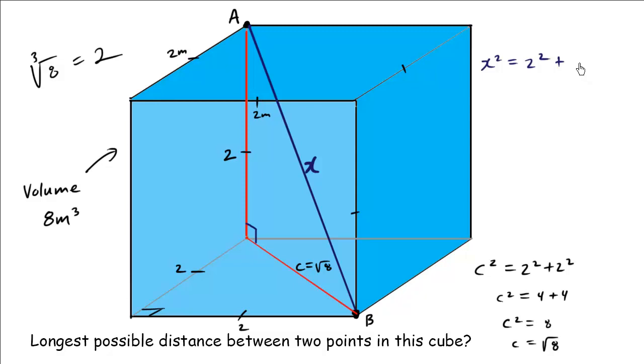Plus this side squared which is C. Hence, we know that C is root 8, but we're squaring it. So what ends up happening is the square and the square root cancel out. So we end up just plus 8. So X squared equals 4 plus 8. X squared equals 12. And so X equals root 12 meters. And that's our final answer.